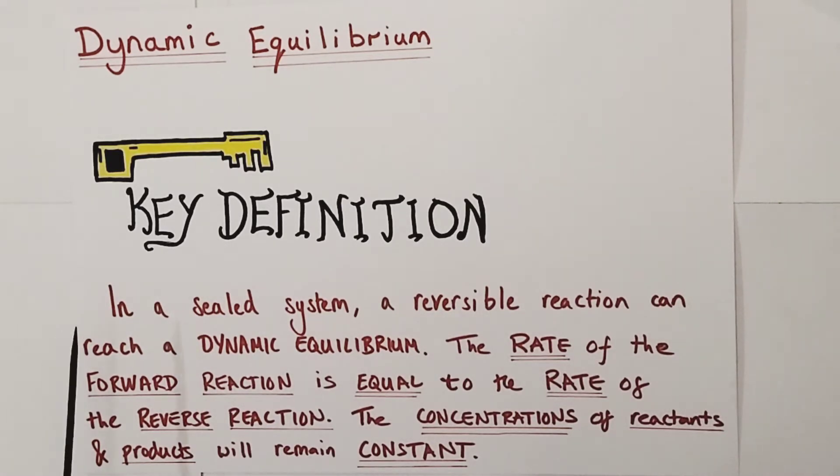In a sealed system, a reversible reaction can reach a state known as a dynamic equilibrium. Once a reversible reaction in a sealed system reaches a dynamic equilibrium, you will find that the rate of the forward reaction will be exactly equal to the rate of the reverse or backwards reaction. However, the concentrations of reactant and product molecules will remain constant. This is the textbook definition of dynamic equilibrium and should be memorized.